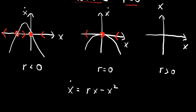When r is positive there are again two fixed points: one at the origin and one at x equals r (now positive). The graph is a quadratic crossing zero at both points. The flow shows x-dot is negative for x greater than r (moving left), positive between zero and r (moving right), and negative for x less than zero (moving left). So x-star equals r is now the stable fixed point, and x-star equals zero is unstable.